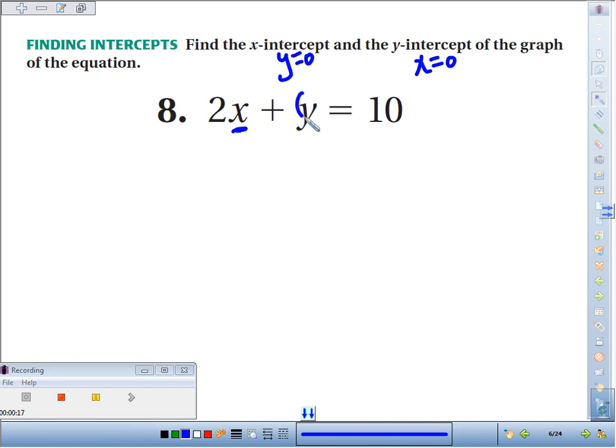If you want to find the x-intercept, you make y 0. Okay, so that's gone. We get 2x equals 10. Divided by 2 on both sides, we get the x-intercept is 5.